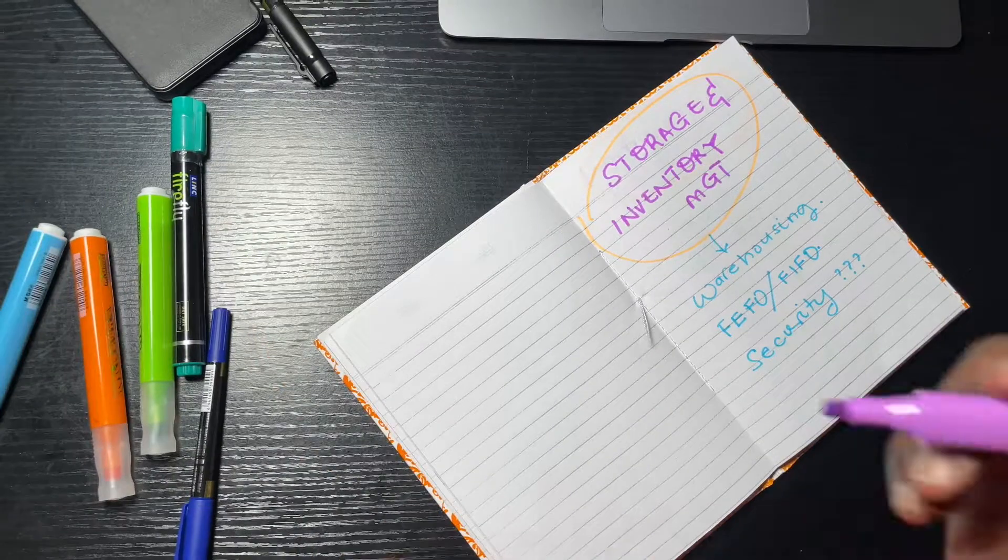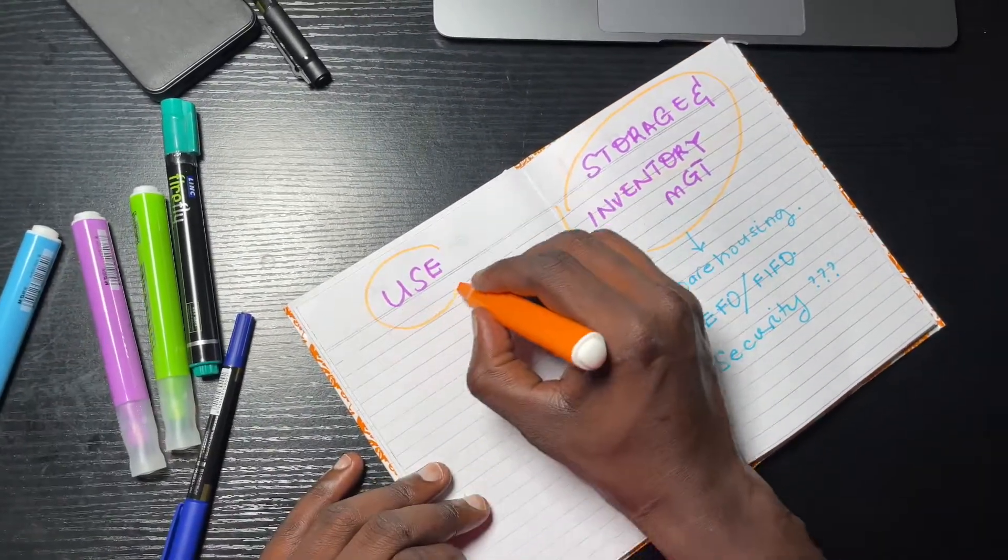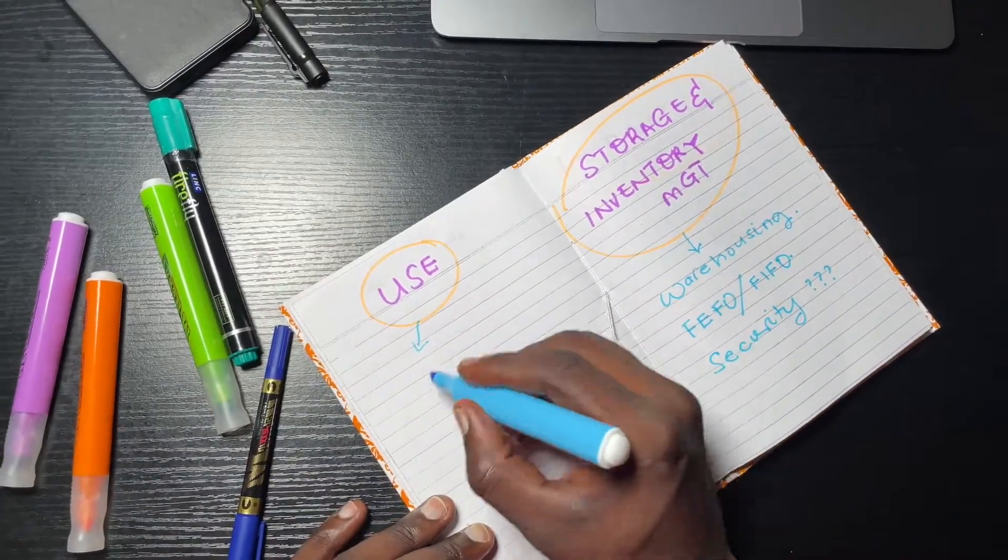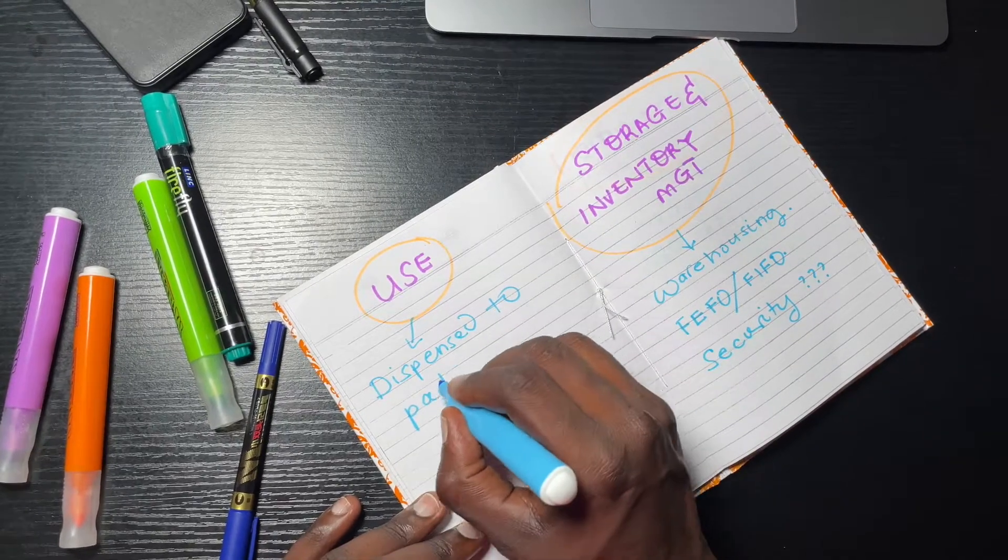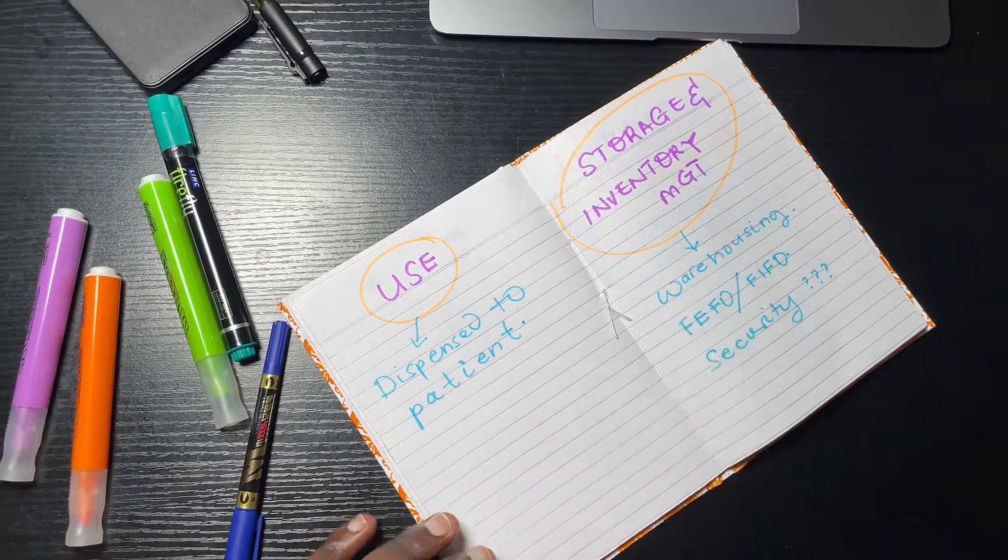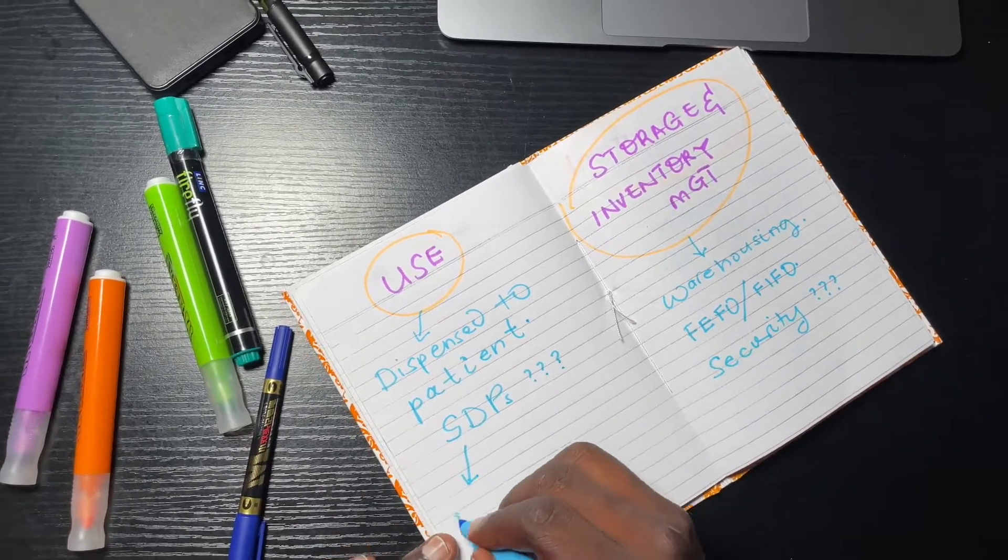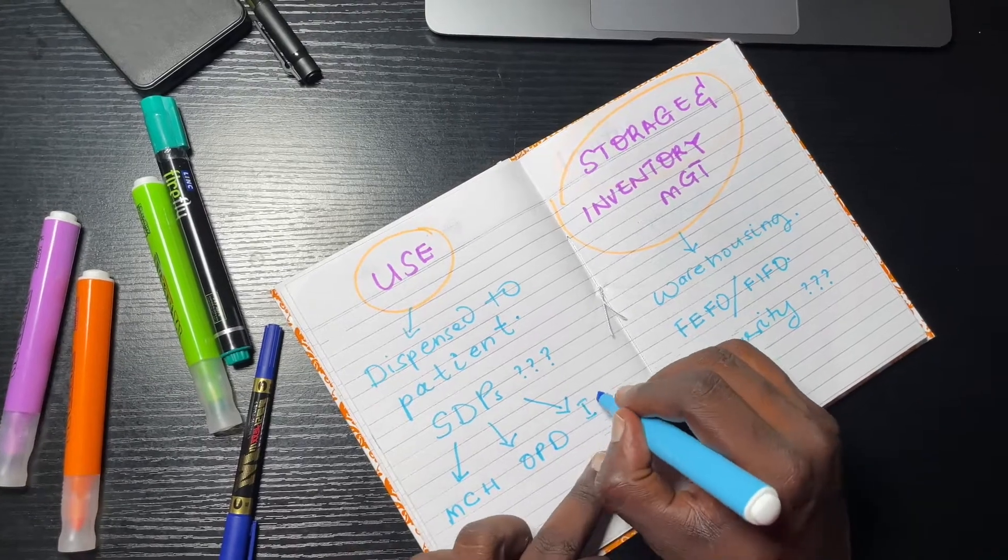Finally, when the products reach the service points, they must be used to treat ailments when health workers dispense these commodities to patients at the various service delivery points. The service delivery points may include maternal and child clinic, outpatient department and the inpatient department.